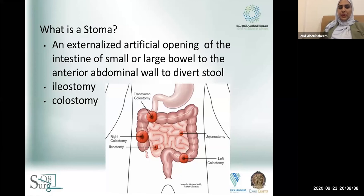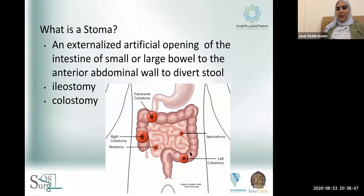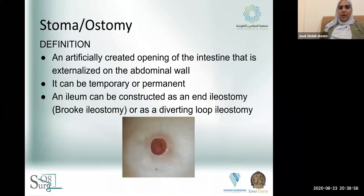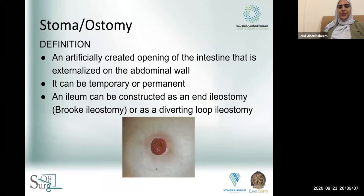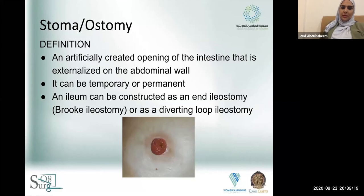For the small bowel, it's best to do the stoma at the end of the terminal ileum, and for the colon it's best at the descending colon — this is for anatomical reasons. The stoma is an artificially created opening of the intestine to the abdominal wall, and it can be temporary or permanent serving a specific purpose. We'll talk specifically about ileum and Brooke ileostomy, as it requires more special surgical steps than creating a colostomy.